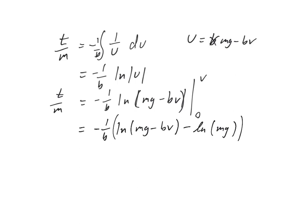And that's multiplied by the negative 1 over b out front. Now, we're going to use the property of logarithms. We're subtracting two logs, so we can put them as one log with them divided by each other. So, negative 1 over b, natural log, mg minus bv, all over mg. And still equal to t over m.